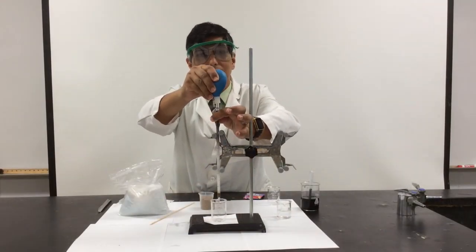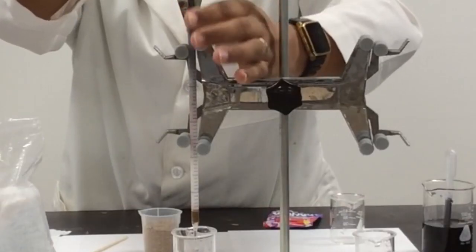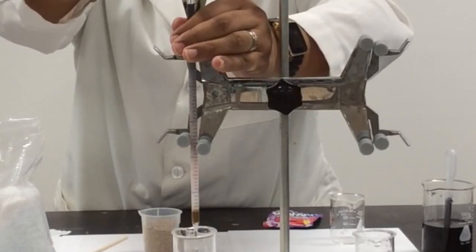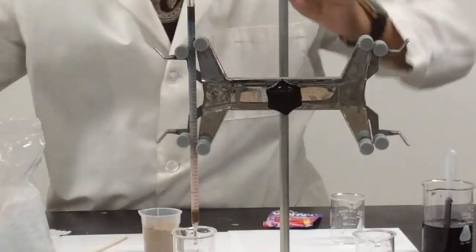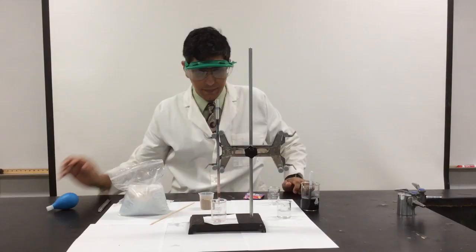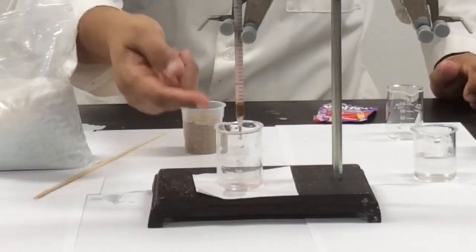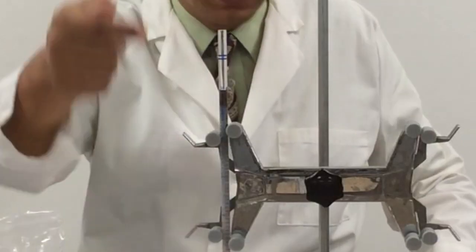Hopefully you'll start to see a fairly significant separation. Can you see some colors separating out already? Here toward the bottom of the column, it seems like the red dye is separating out more quickly, and then the blue dye is up here.